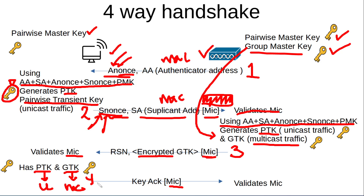The fourth stage of this handshake consists of the end device sending an acknowledgment to the access point, and at this moment the virtual control port is opened, so the end device and the access point can start communicating using encrypted traffic. The blueprint talks about configuring and validating this, which is a bit odd, because when you configure personal mode or enterprise mode you will be enabling it — so that's it.